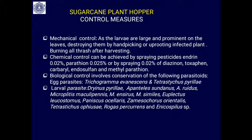For mechanical control of the sugarcane plant hopper, since the leaves are large and prominent, one can destroy the pest by hand picking. Affected plants can be uprooted and removed from the field. After harvesting, burning the crop trash also helps control infestation.